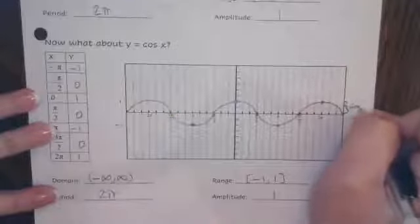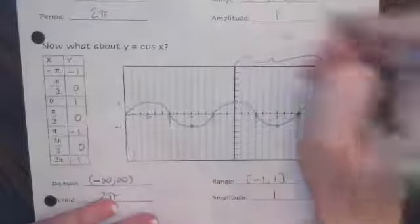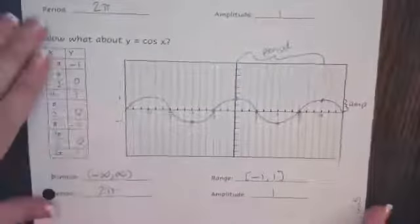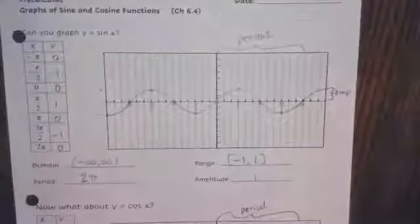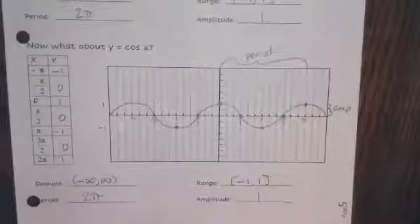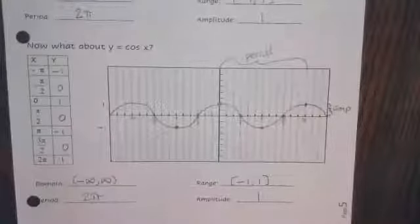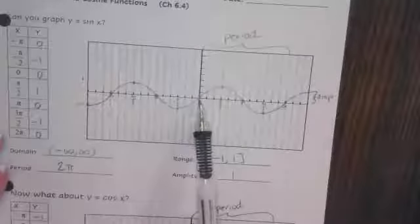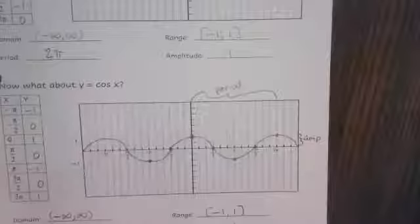So our domain is also negative infinity to infinity, our range is also negative one to one, because the low value is at negative one and the highest value is one. It too has an amplitude of one, because from the center to the top it is one and from the center to the bottom it is one. The big difference is our sine curve starts at zero, zero, and our cosine curve starts at zero, one.